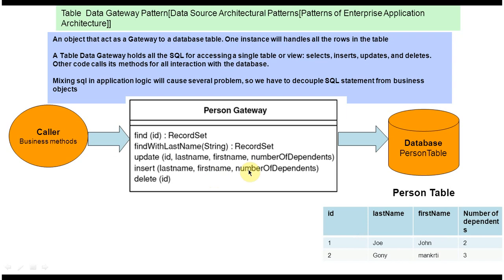The Person Gateway is like an entry point to the PersonTable — using it you can manipulate and access information in the PersonTable. The business method calls the PersonGateway methods to interact with the PersonTable. Since mixing SQL in application logic will cause several problems, we have to decouple SQL statements from the business object. So all SQL-related stuff is placed in the PersonGateway, keeping the business method free of any SQL.